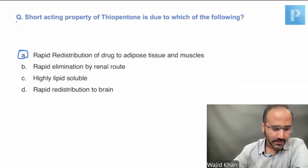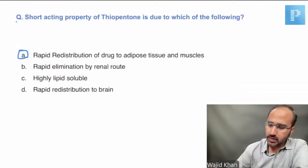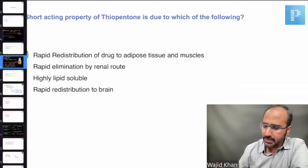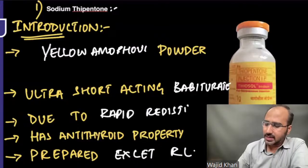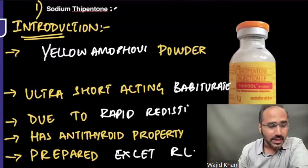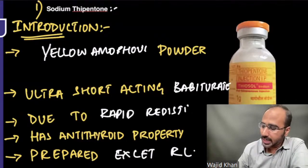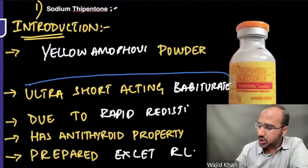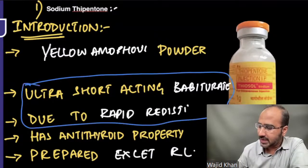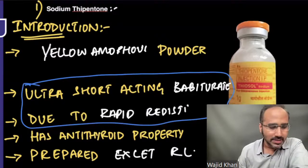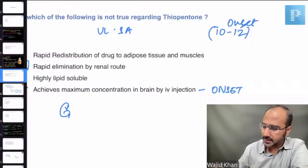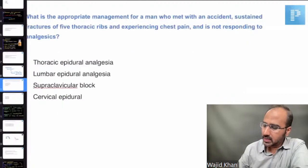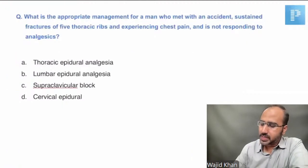Going back to the RR slide: sodium thiopentone is regarded as an ultra-short-acting barbiturate because it has rapid redistribution.